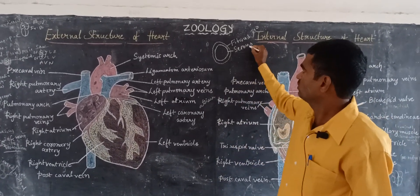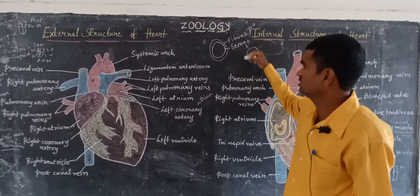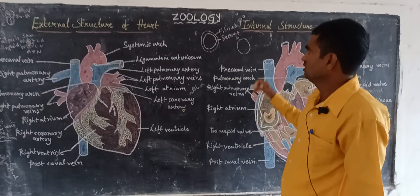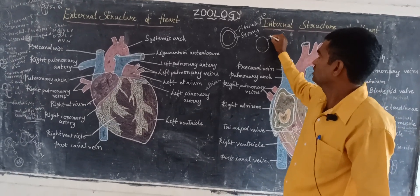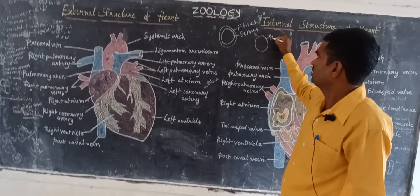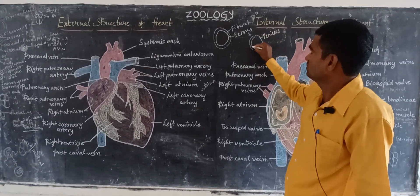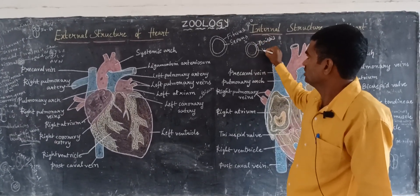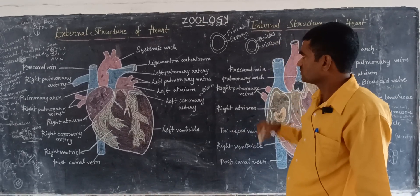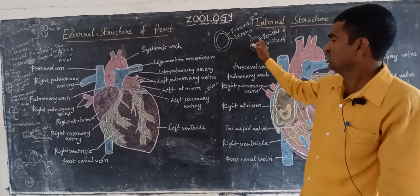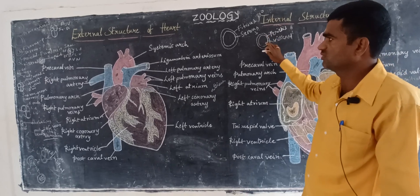If you take only the serous pericardium layer — this is the serous pericardium layer — the outermost covering layer is called the parietal layer, and the innermost layer is called the visceral layer. So likewise, the serous layer is again divided into two layers: parietal layer and visceral layer.